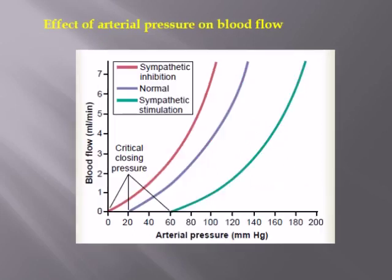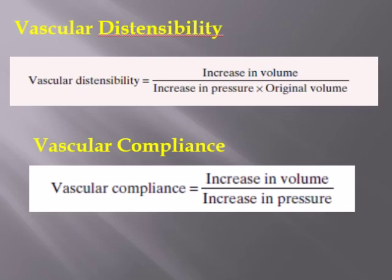Finally, when there is sympathetic stimulation, vasoconstriction occurs and arterial pressure increases multifold — this will be studied in chapters 18 and 19 separately. Thank you very much. This is all from chapter 14. In our next lecture, we will discuss vascular distensibility and compliance.